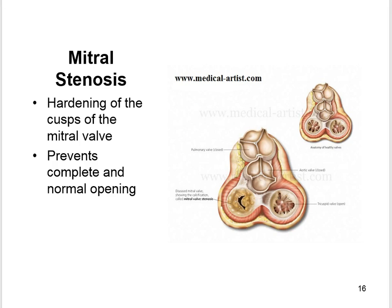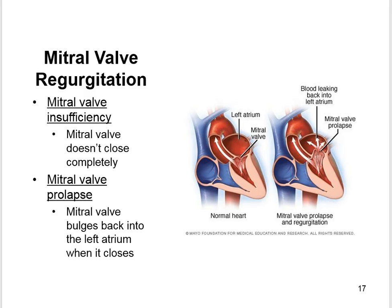Mitral stenosis is the hardening of the cusps of the mitral valve, preventing complete and normal opening; the valve leaflets become stiffer, narrowing the opening and reducing blood flow. Mitral valve regurgitation occurs when the leaflets do not close completely, letting blood leak backward — also called a leaky valve. Mitral valve insufficiency means the mitral valve doesn't close completely. Mitral valve prolapse is when the mitral valve bulges back into the left atrium when it closes.